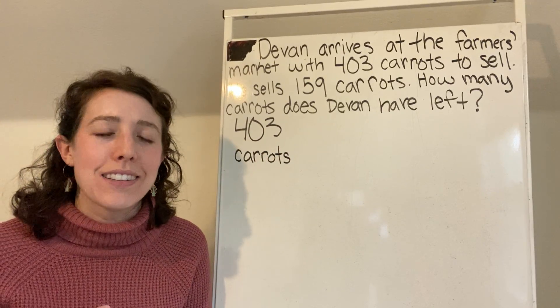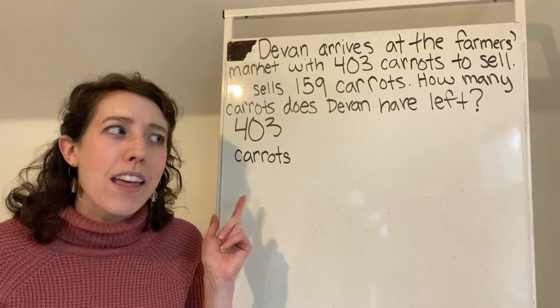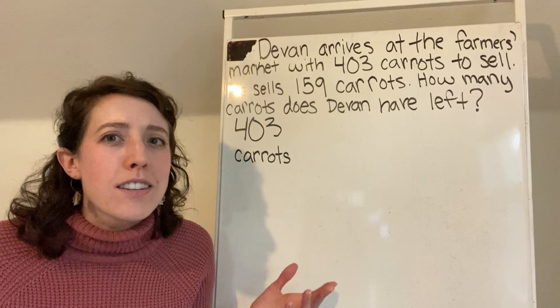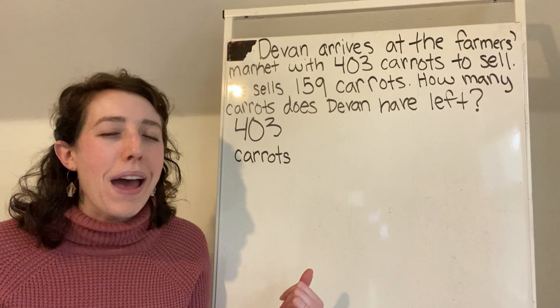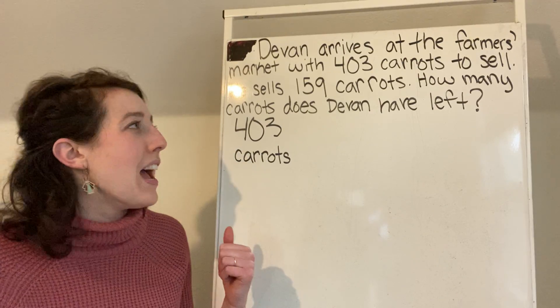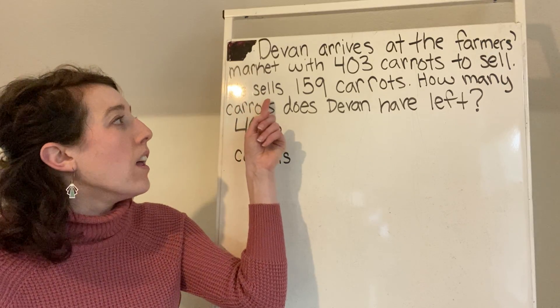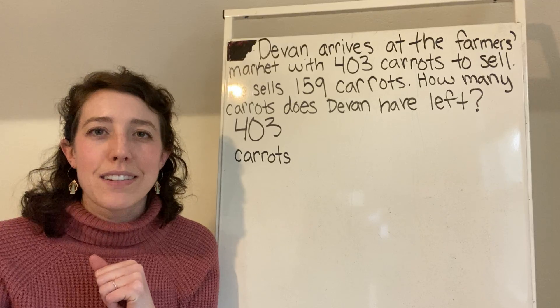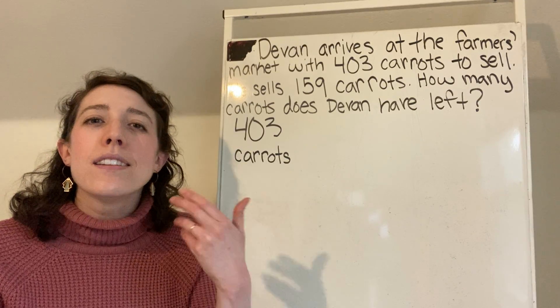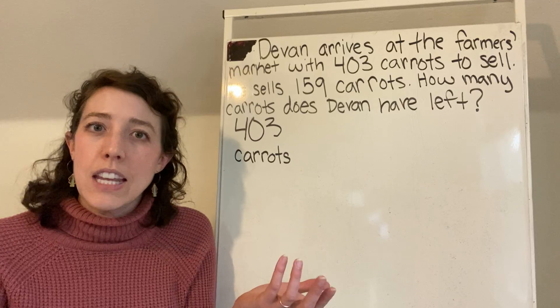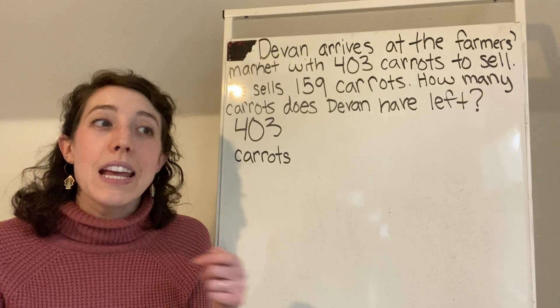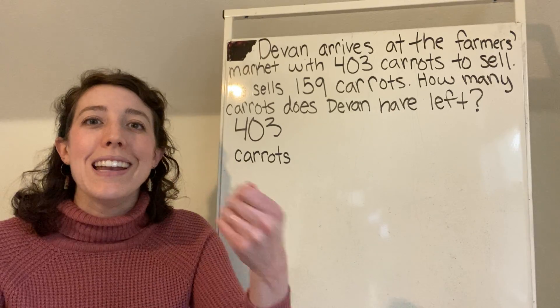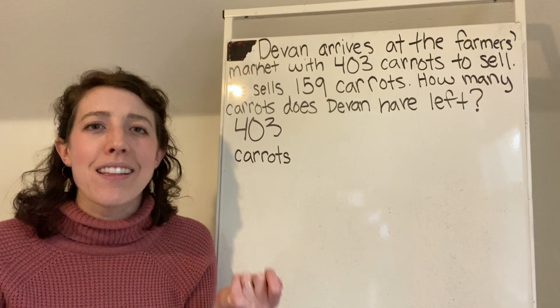That's what our number is telling us. And thinking ahead, they've already told us that he's going to be selling at least some of these carrots. So let's go back to the next sentence to see what happened next. He sells 159 carrots. So if you're selling something, think about when you go to a store, if the store is selling you something, that means that the store, that person is giving that thing away.